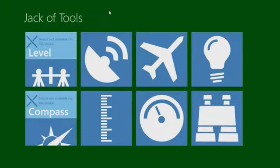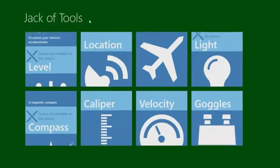Jack of Tools shows all the features your device has, with X marks for features not present. It's a great way for consumers and developers to know what their device is capable of. It was written by a developer in Tucson, Arizona, and was actually showcased in the Windows Store tools section.